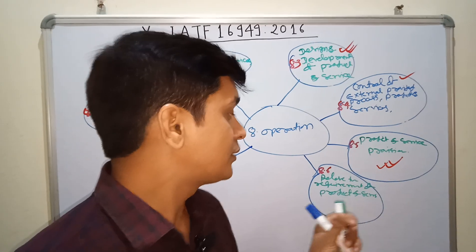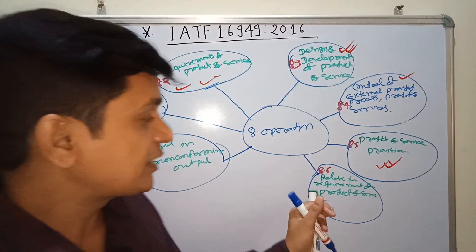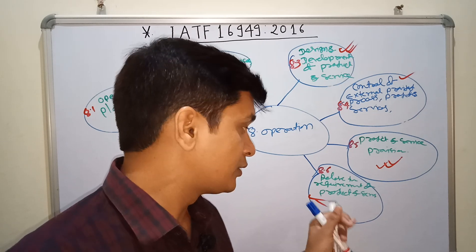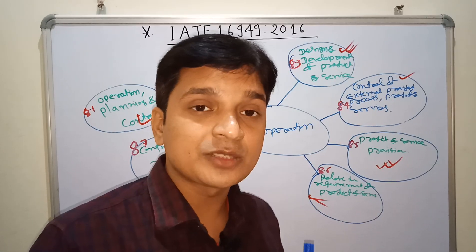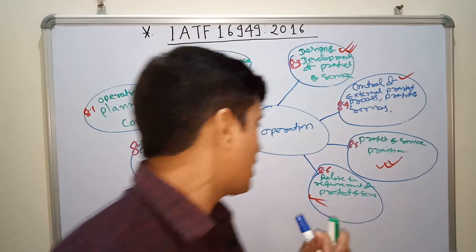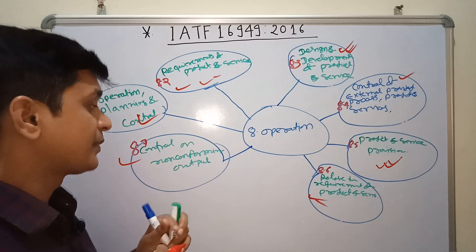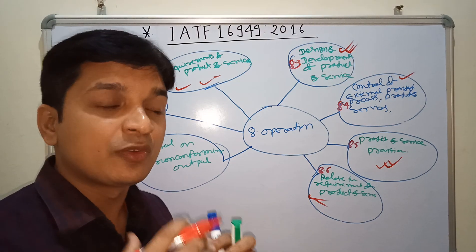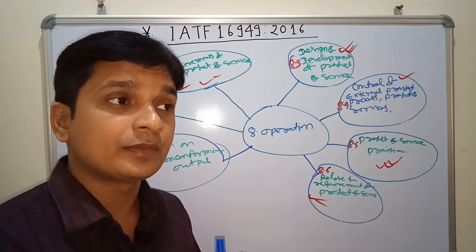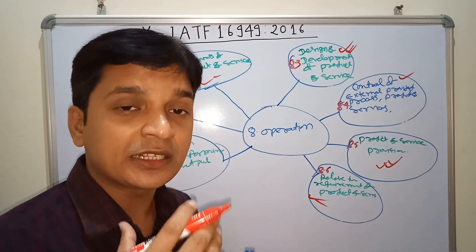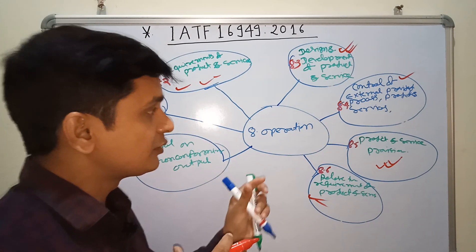Sub-clause 8.6 covers the Release of Products and Services. This clause includes layout inspection as a key requirement. Sub-clause 8.7 is Control of Non-Conforming Output, which means control of rework product, control of repair product, and control of customer-returned product — all of which are very important in this clause.